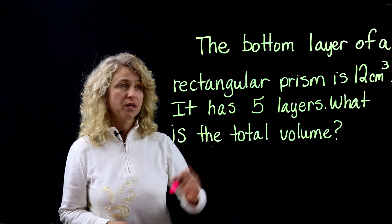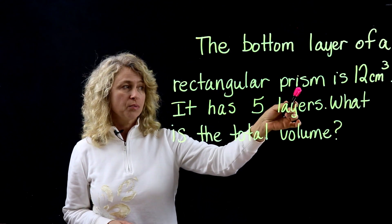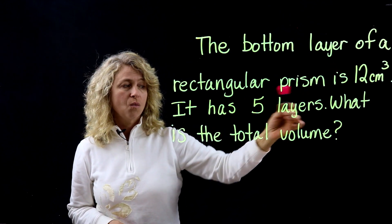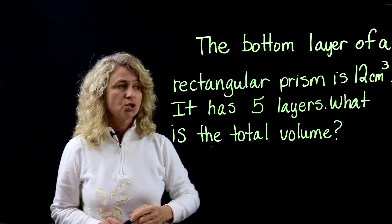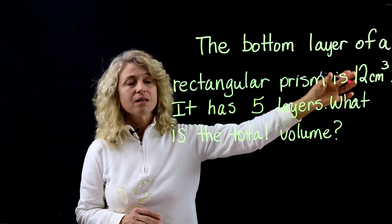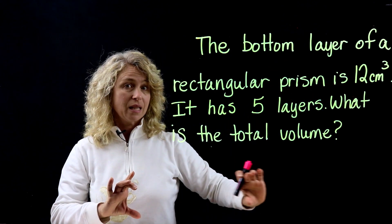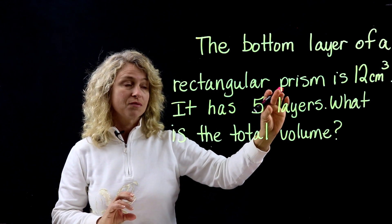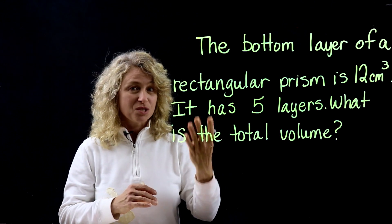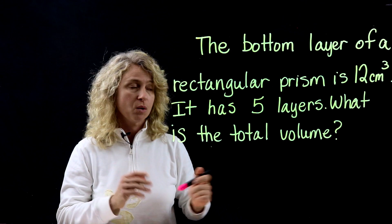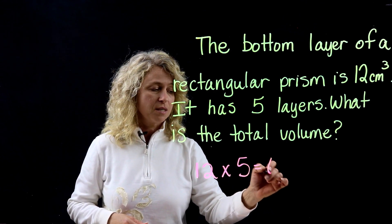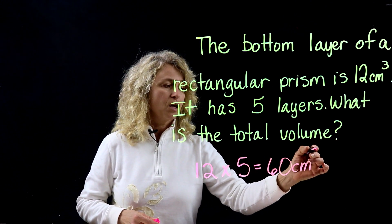The last problem: the bottom layer of a rectangular prism is 12 centimeters cubed and it has 5 layers. What is the total volume? The base layer has a volume of 12, and there are 5 layers. You could add 12 five times, but a quick way is 12 times 5, which is 60. The answer is 60 centimeters cubed.